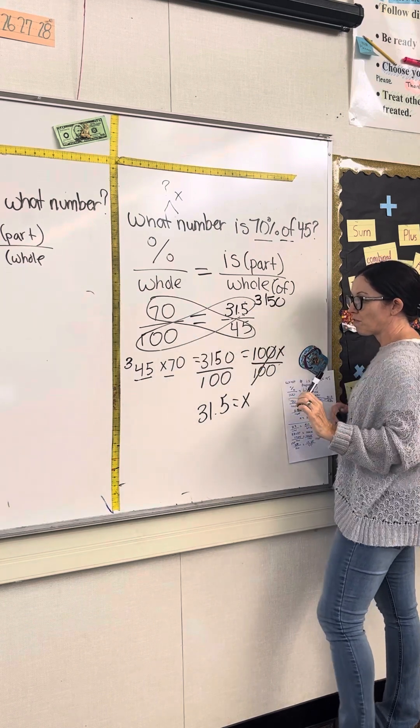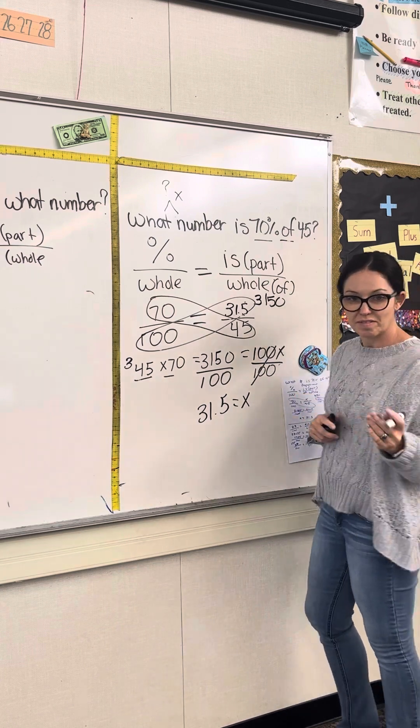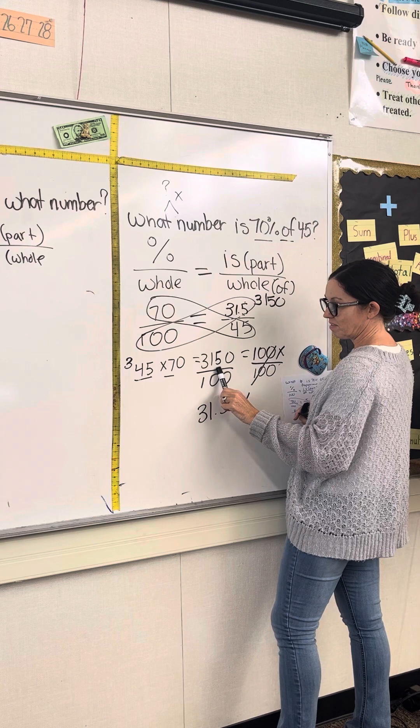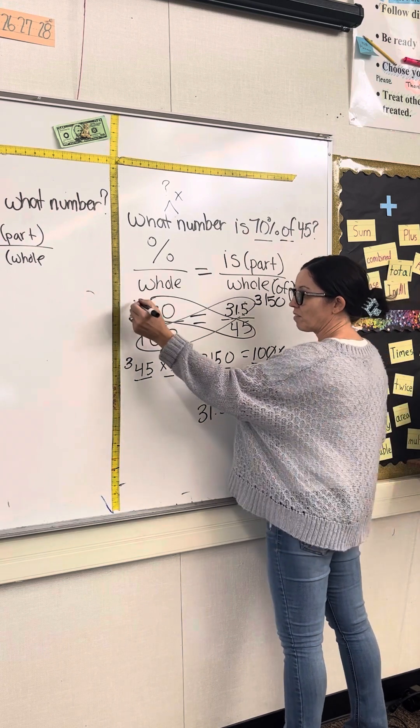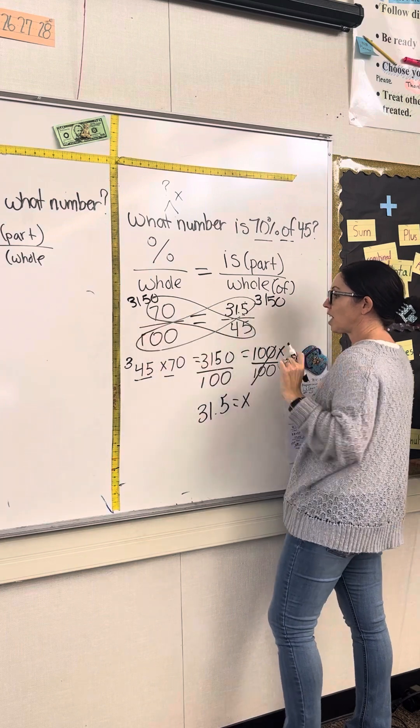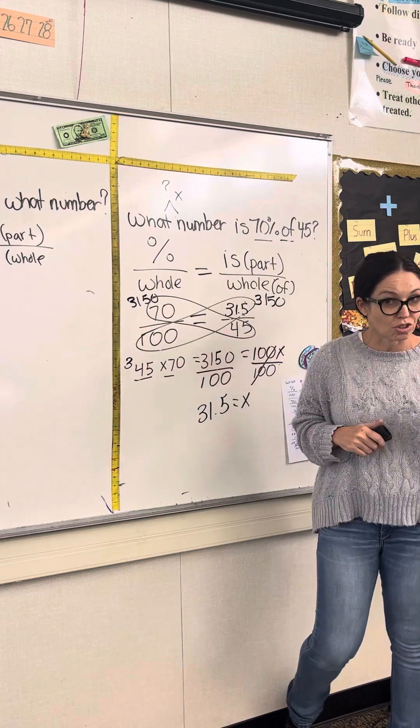And 70 times 45 is the same as 7 times 45, which we did here. 3,150. And these are the same products, so that means it's a true proportion.